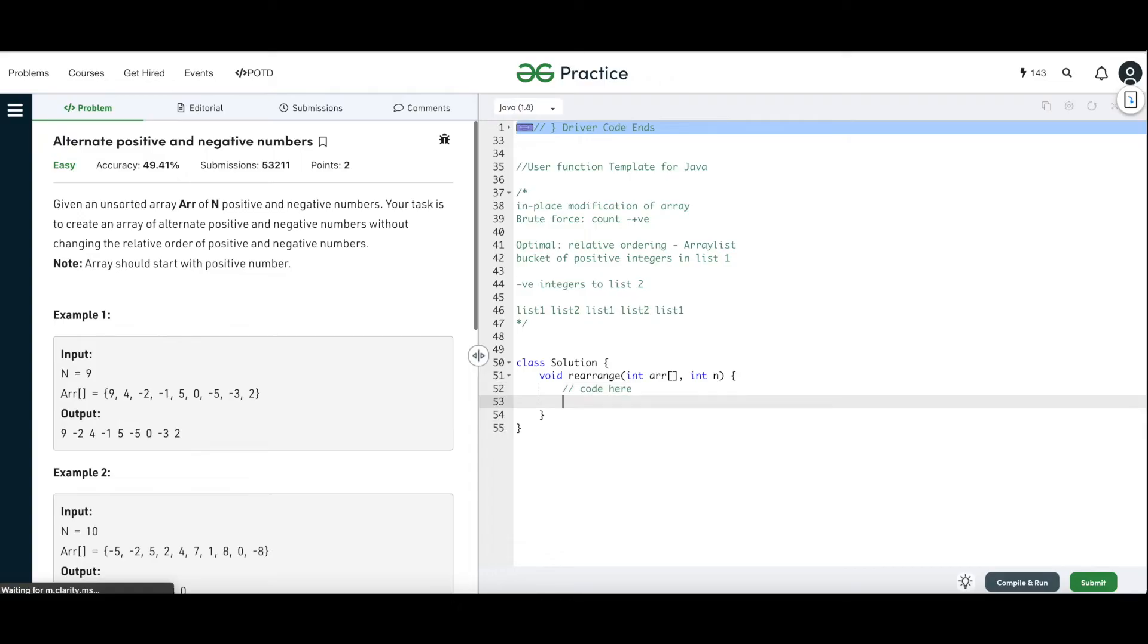So let's start with the code. Like I said, we'll have one array list to track the positive integers first. So we can call this as list positive. Another list for the negative ones.